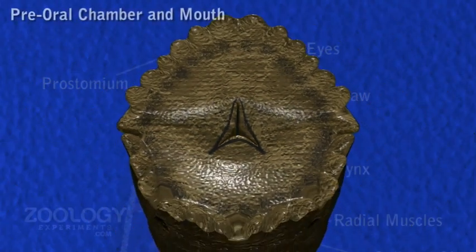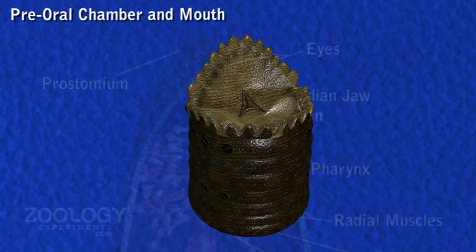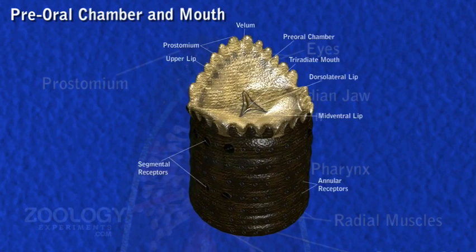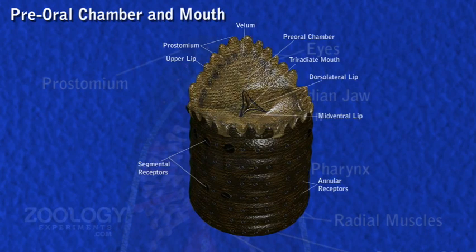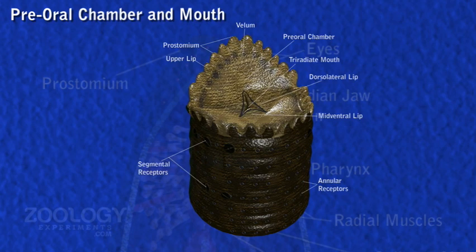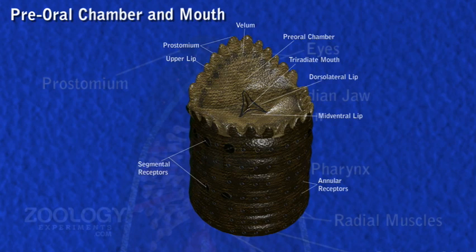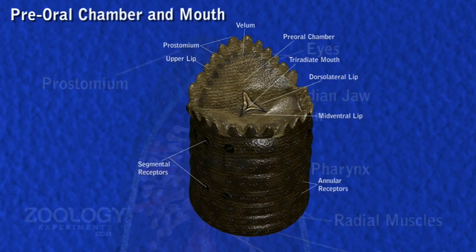The preoral chamber is a ventrally situated cup-like depression at the oral sucker. Its roof is formed by a membrane-like vellum bearing a tri-radiant opening. The mouth is in the center; one ray is mid-dorsal while the other two are ventrolateral. Accordingly, the vellum forms three lips around the mouth, one between two adjacent rays, so that there are two dorsolateral and one midventral.